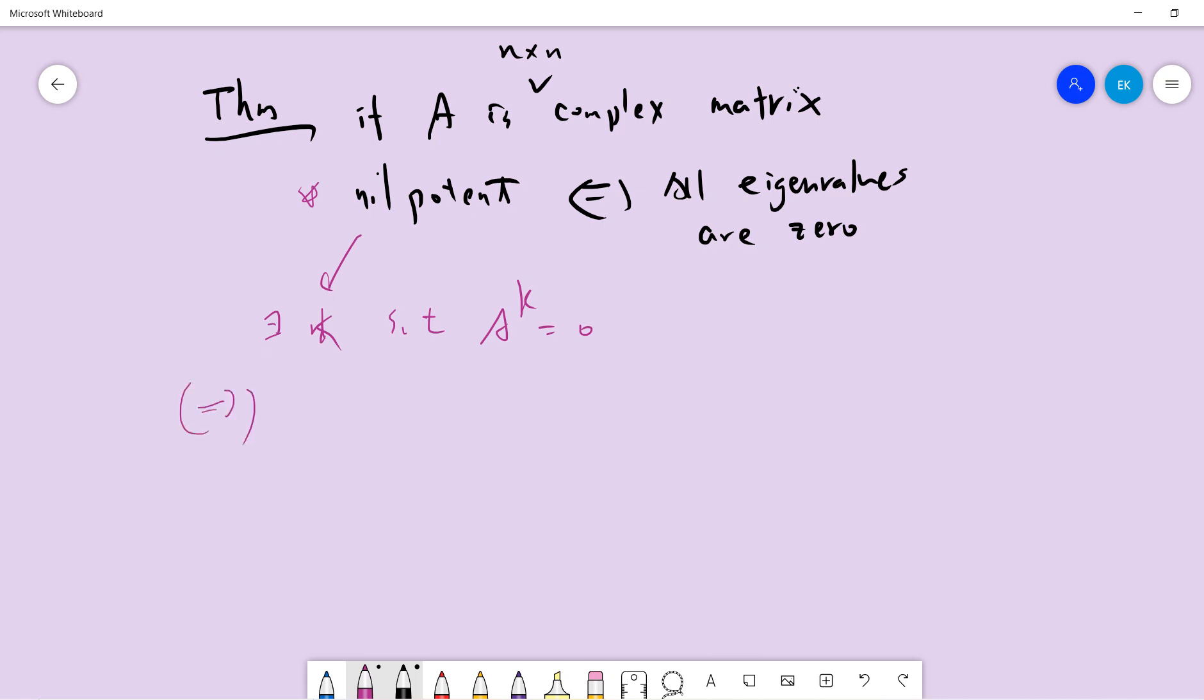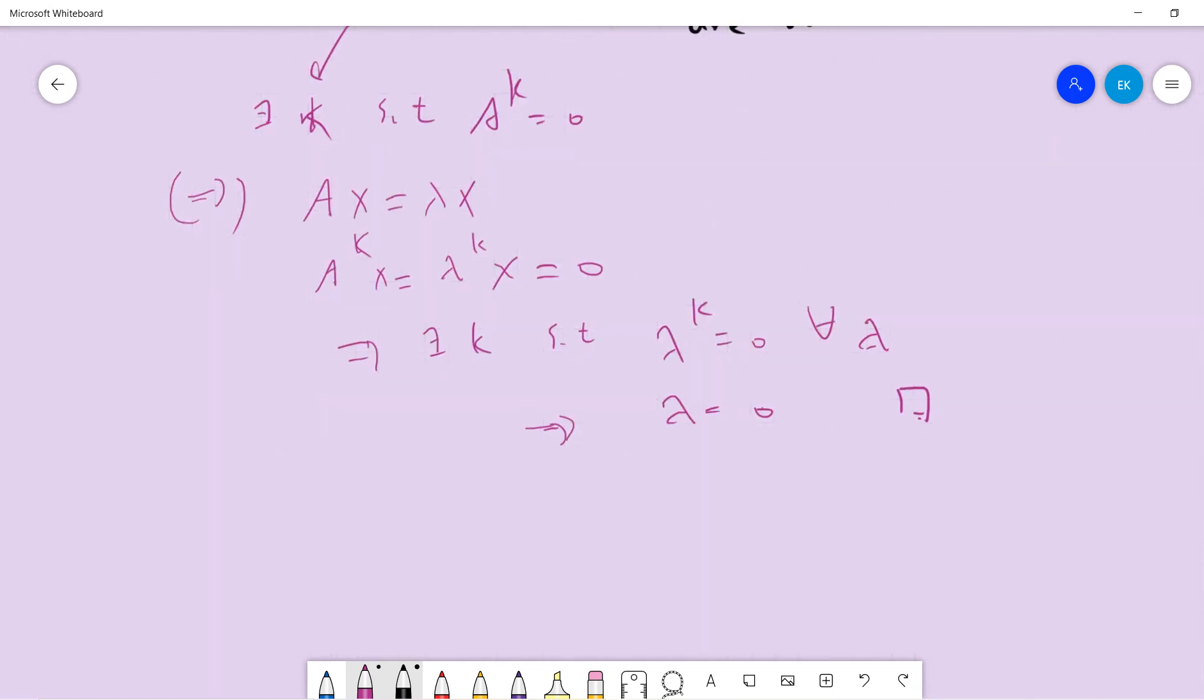So we prove the first direction. Now eigenvector means that Ax is equal to lambda x, and this lambda means eigenvalue. So we can take the k, and it's very easy. We know that this is this, and since A^k is zero for some k, so this tells you that there exists some k such that lambda^k is zero for all lambda. So this tells you that lambda is zero. So this way we have proved.